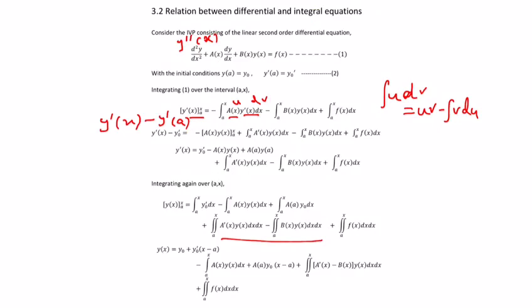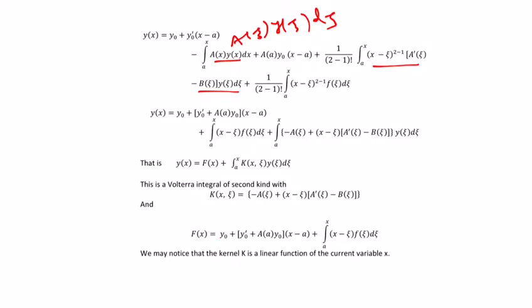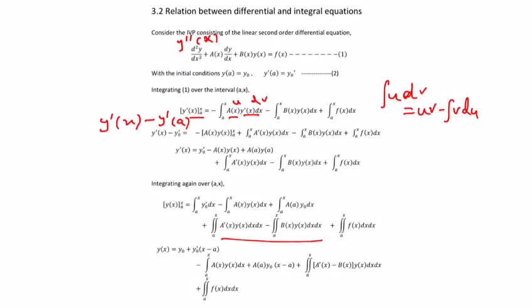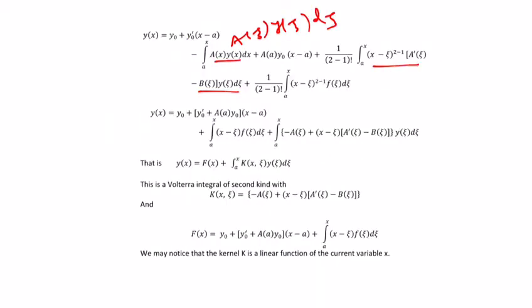When the second integral comes, you have to apply the formula: the integral from a to x iterated n times gives 1 over (n minus 1) factorial times i_n(x). With n equal to 2, this gives 1 over (2 minus 1) factorial times (x minus a) to the power (n minus 1), that is (2 minus 1), times a dash(psi). The remaining you take in the form of psi. Similarly, you apply the formula for the last f(x) dx dx term as well. Then for y(x), you combine the (x minus a) terms and get this expression.